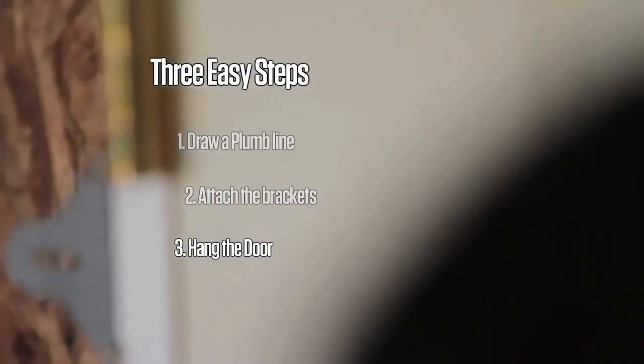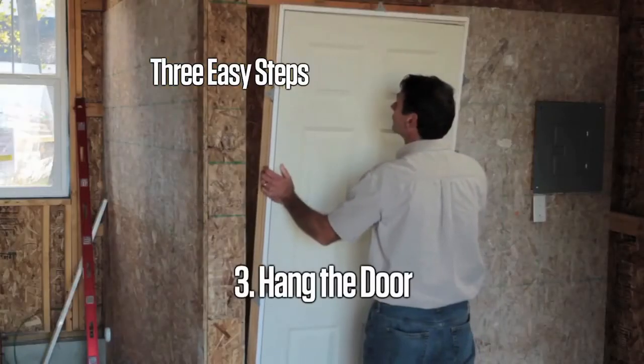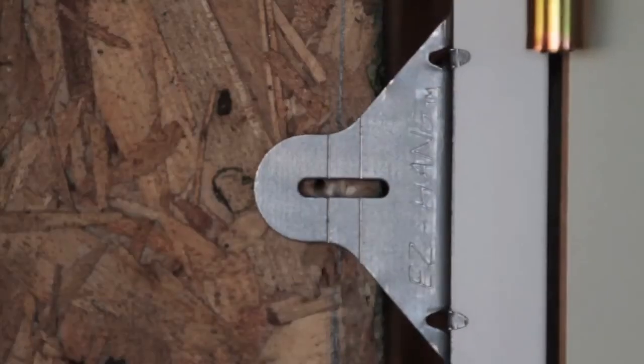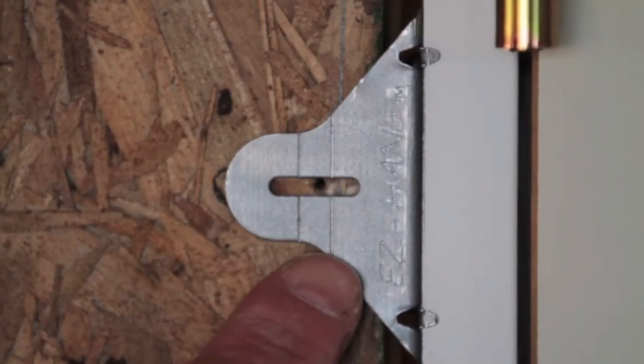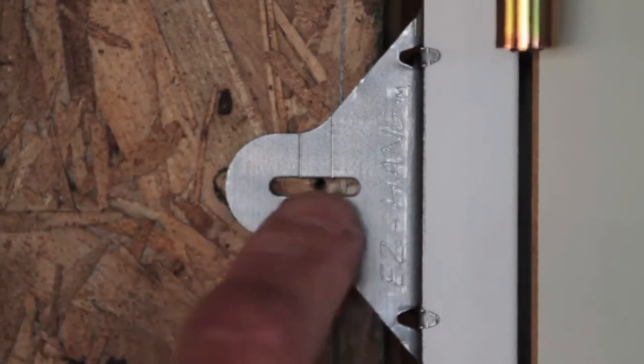Next, insert the door in the opening. Look at the lines on the bracket. Pick one of these lines on the bracket to align with the plumb line that you drew on the wall.